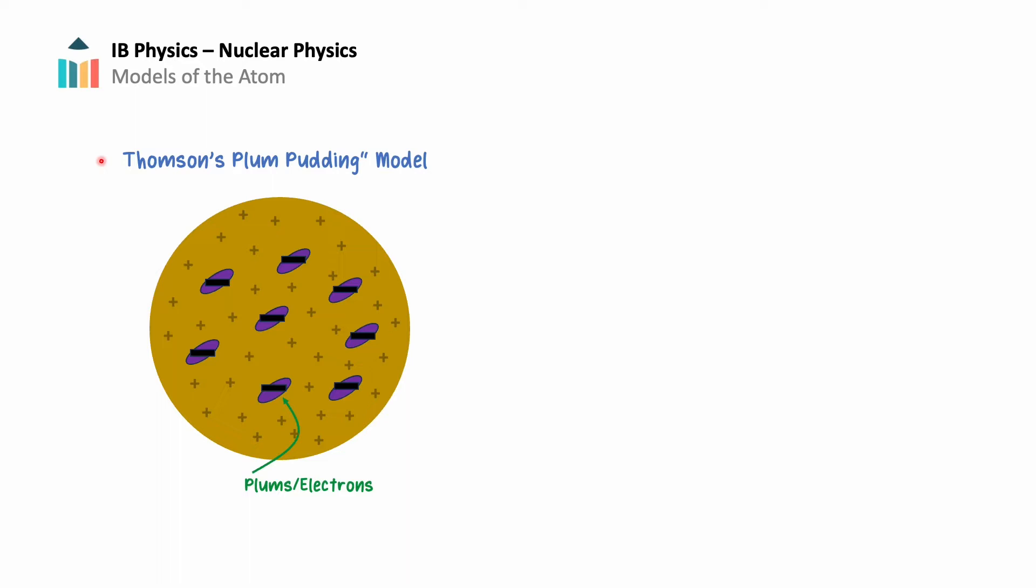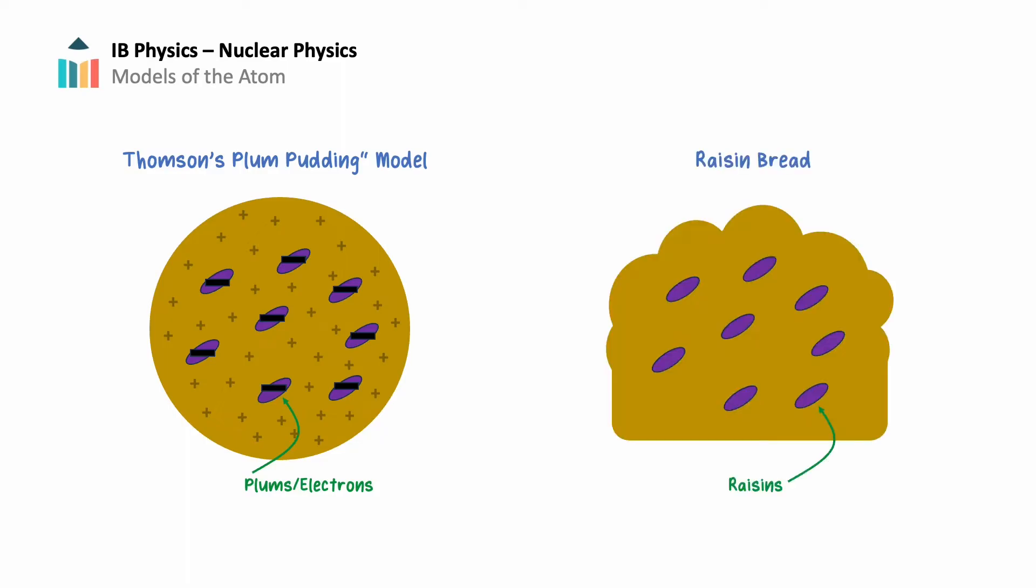His model for the structure of the atom consisted of negatively charged electrons embedded in a uniform matter that had an overall positive charge. It was considered to be akin to plum pudding. For those unfamiliar with plum pudding, think of it like raisin bread, where the atom was considered to be a blob of positively charged pudding and it contained negatively charged plums, the electrons.